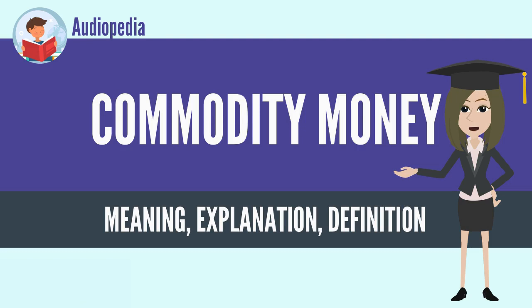Examples of commodities that have been used as mediums of exchange include gold, silver, copper, salt, peppercorns, tea, large stones such as Rai stones, decorated belts, shells, alcohol, cigarettes, cannabis, silk, candy, nails, cocoa beans, cowries, and barley.